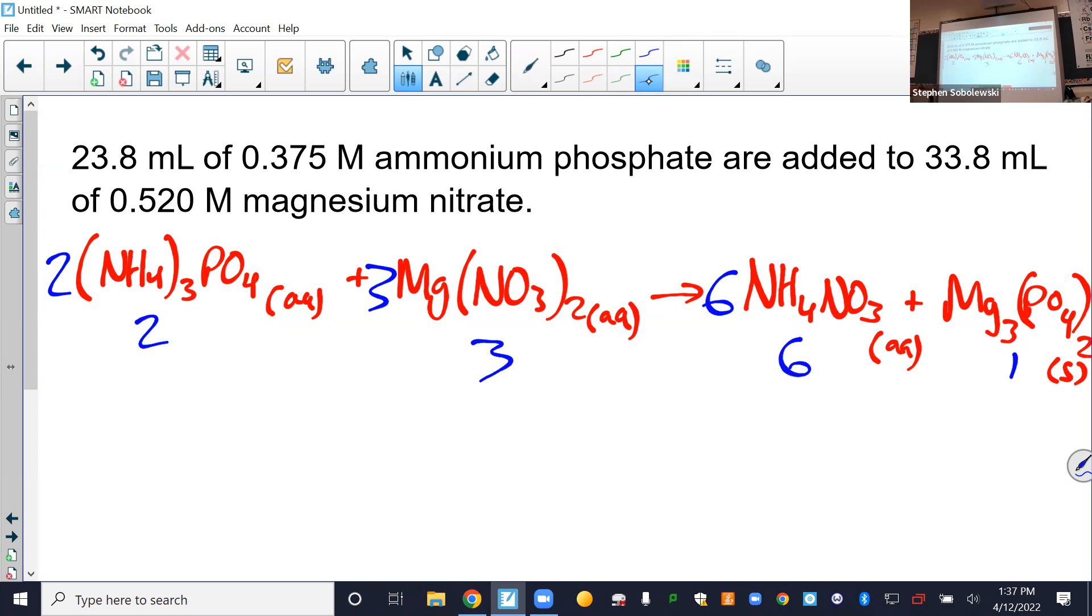Let's fill in a BCA table. That stands for before, change, and after. Your chem teacher might call this an ICE table, initial change and equilibrium. It's just a useful way of organizing the moles in a reaction. We start with moles of each of our reactants. Normally in stoichiometry we go grams to moles. Well, we don't have grams here. So what do we do? We're going to remember that molarity equals moles over liters. So moles equals molarity times liters. All we have to do is multiply our molarity times liters for each of our solutions.